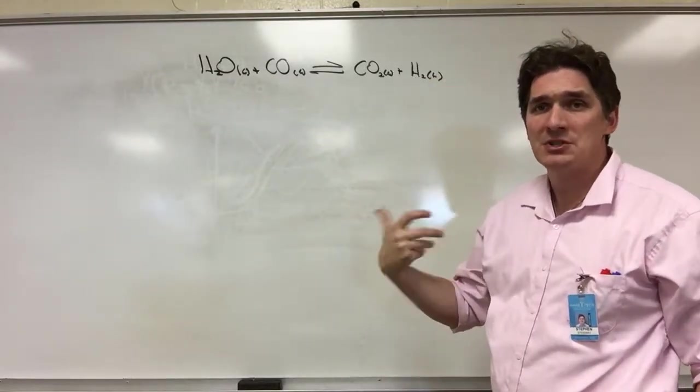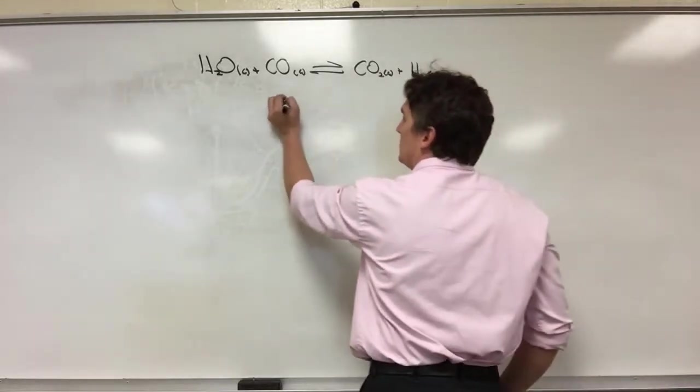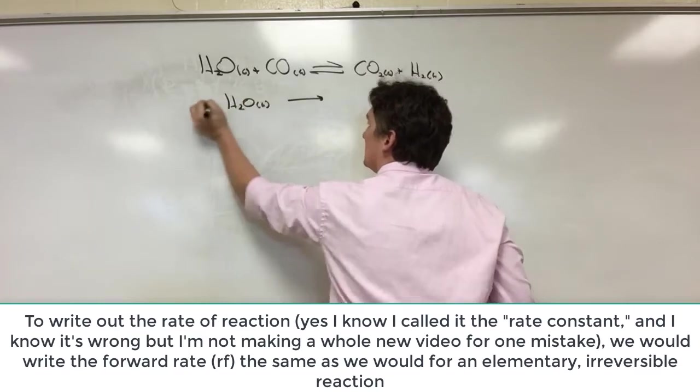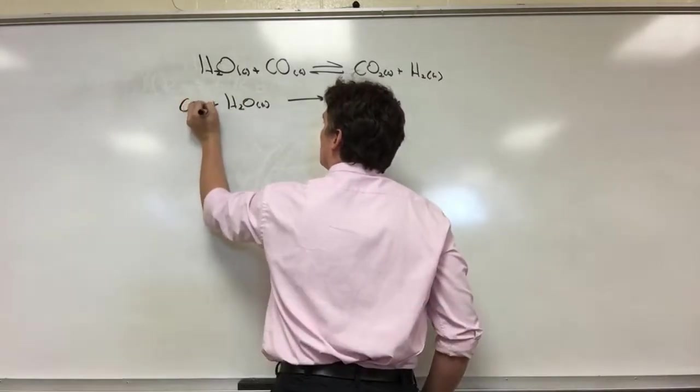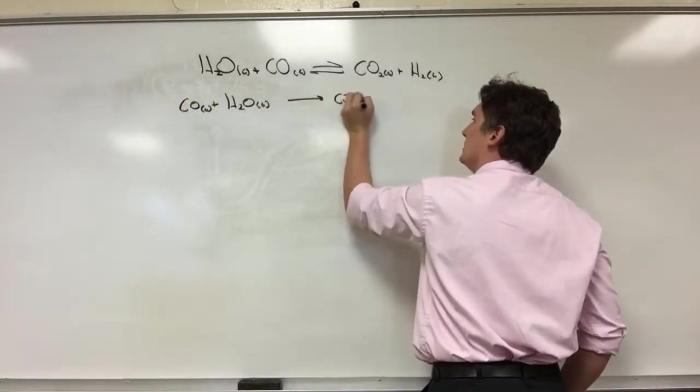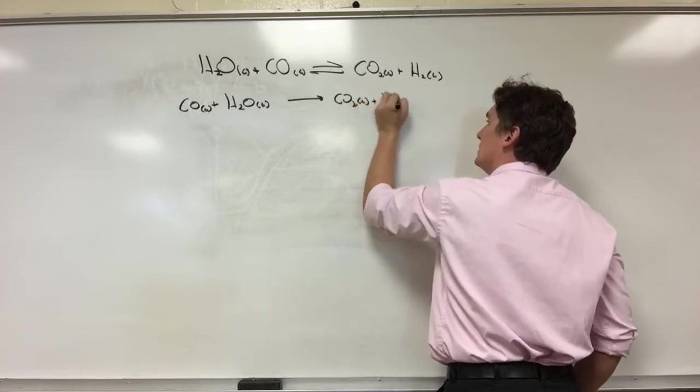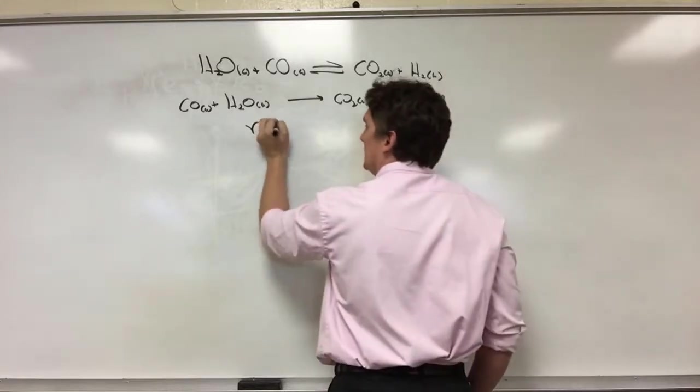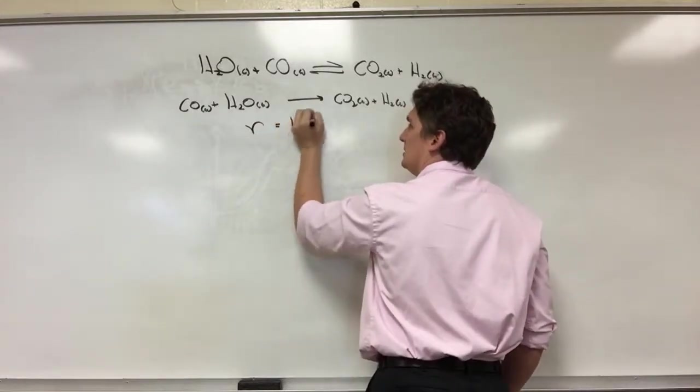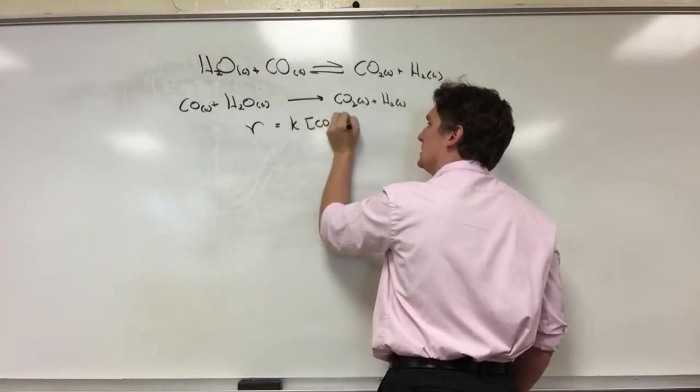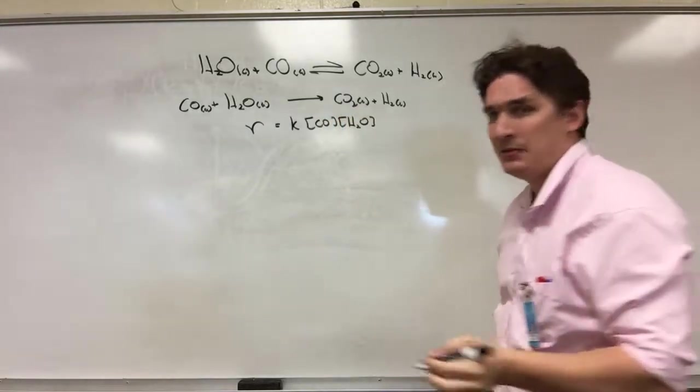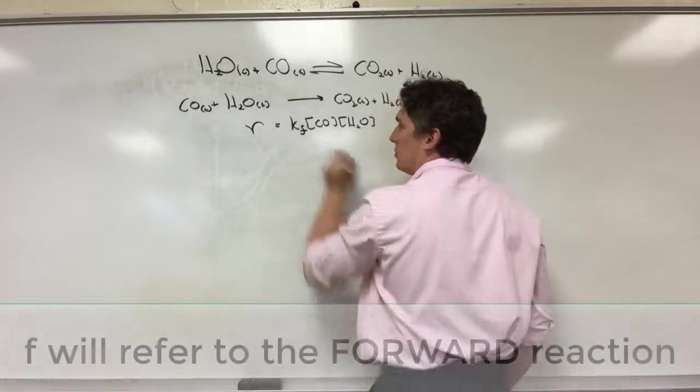If we were just to write out the rate constant for the forward reaction, let's say we treat this as elementary. We would get that the rate on extended reaction basis, R, is equal to K concentration of CO concentration of H2O. Now, we're going to designate this with an F for the forward reaction.